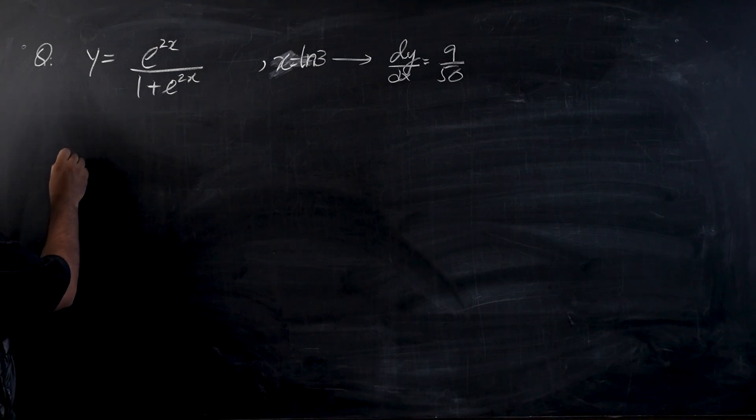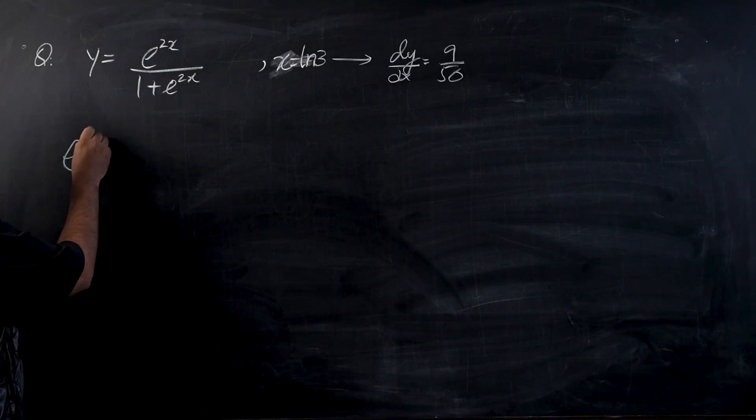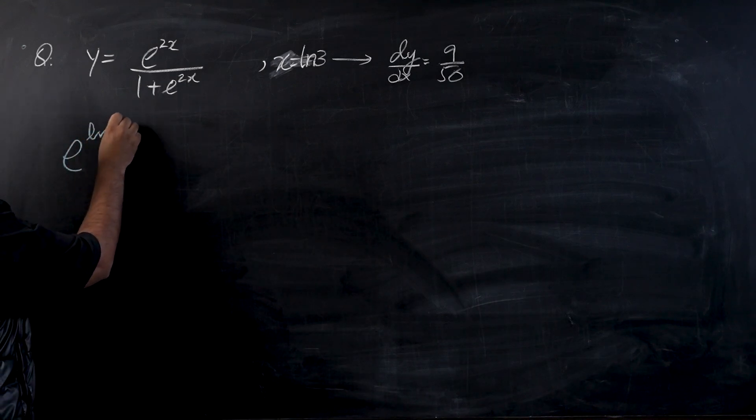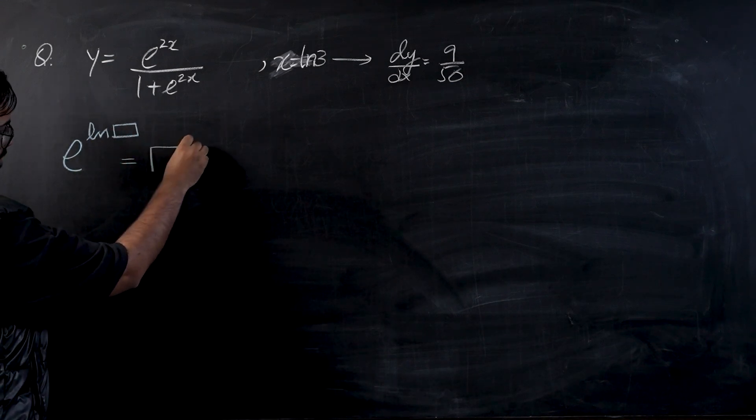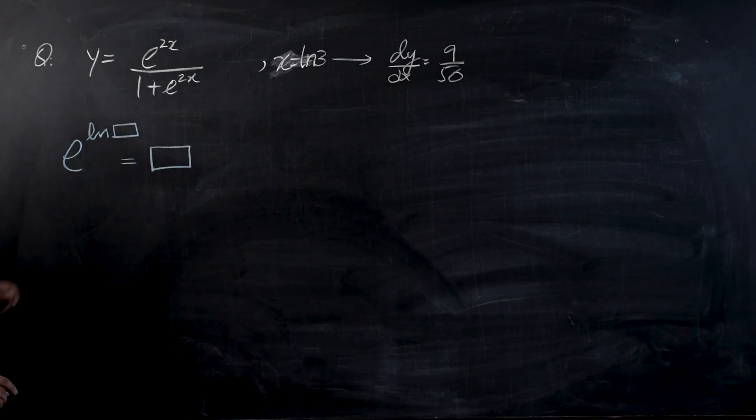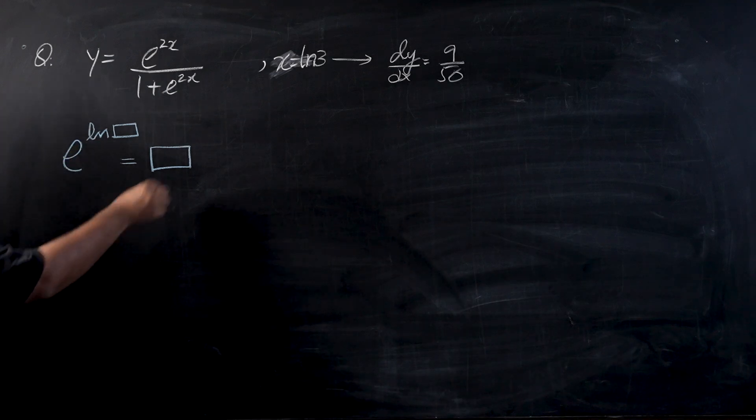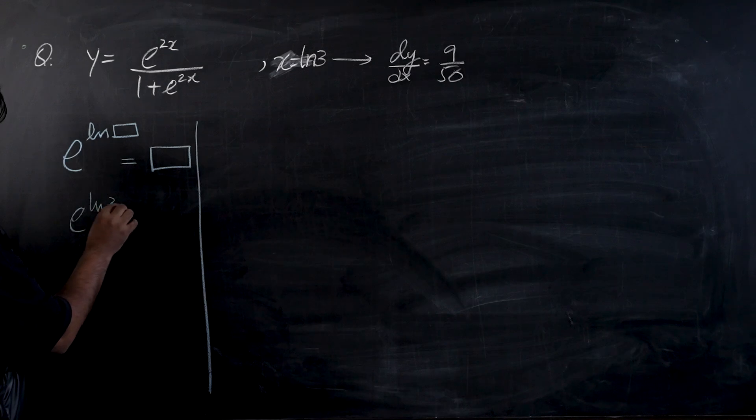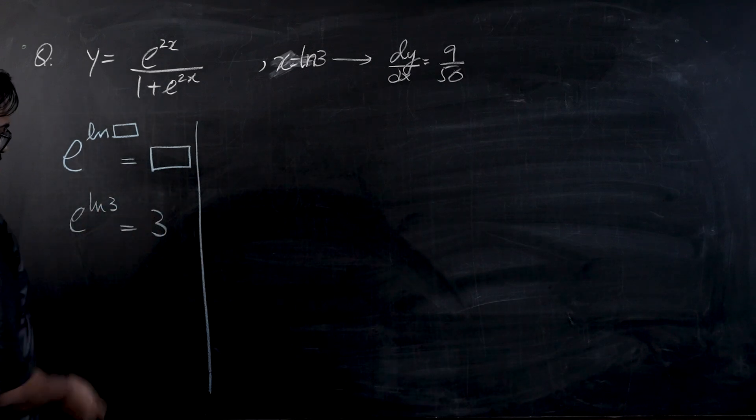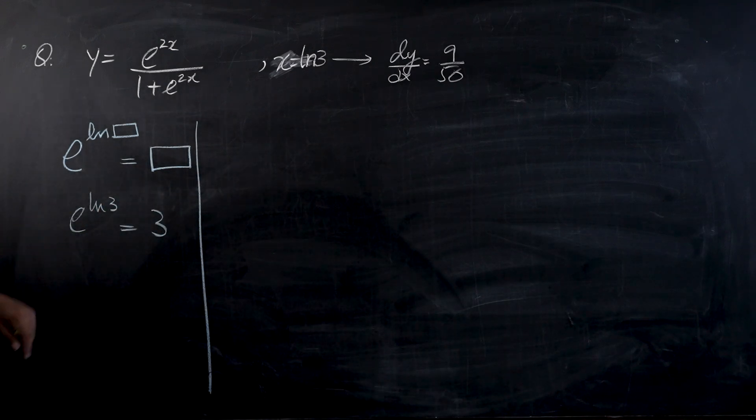So the property I'm talking about is if you have e raised to power of ln of something, that thing is the final answer. So if you have e raised to power ln of three, the final answer would be three.